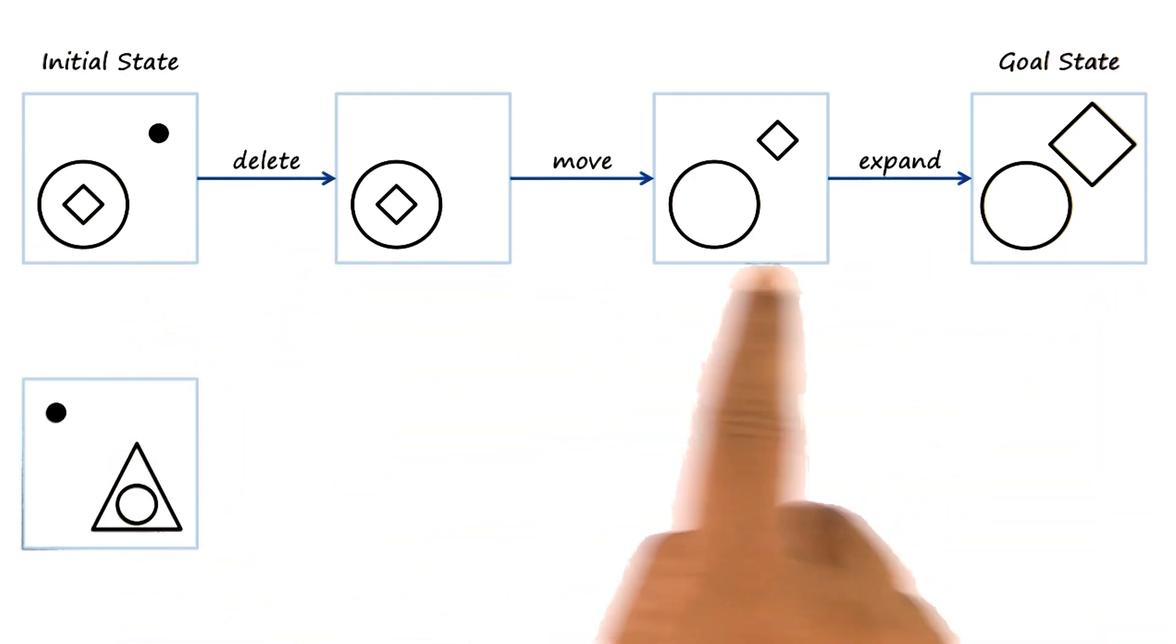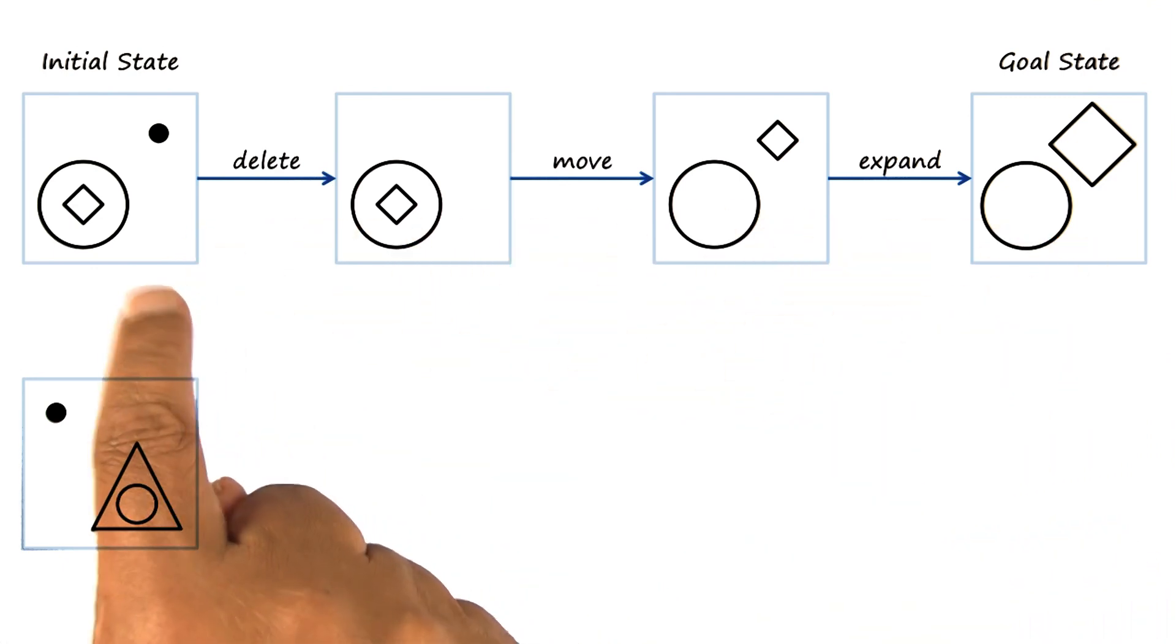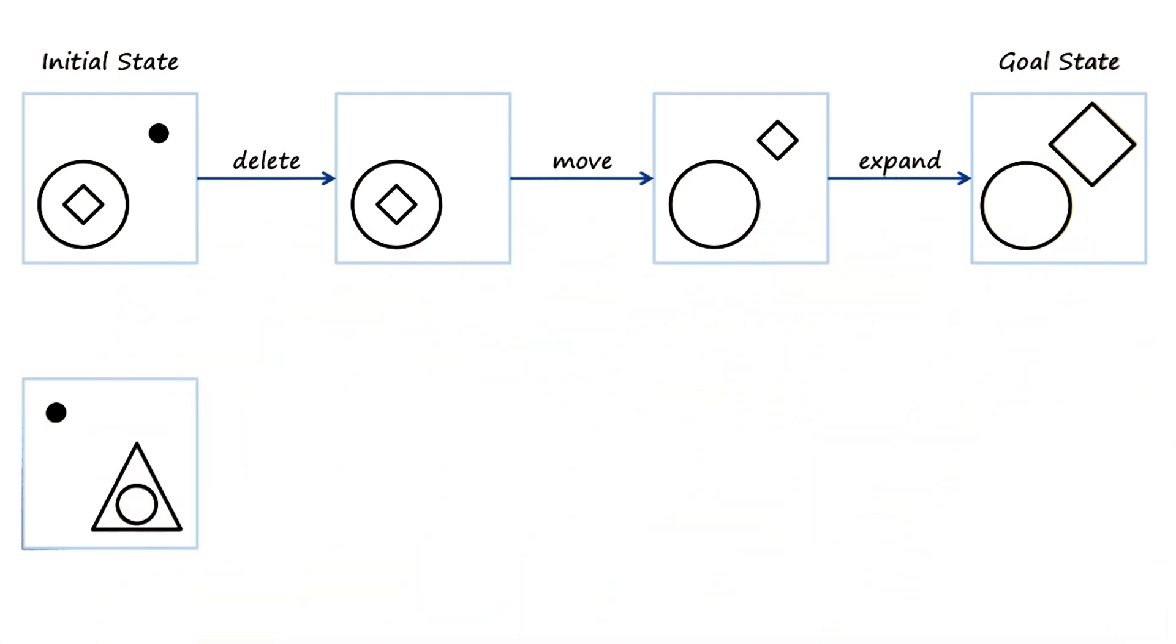The advantage of doing this analysis and coming up with a sequence of transformations that will take us from the initial state to goal state is that we can now think in terms of applying the same set of transformations to the image C. Let's do that.